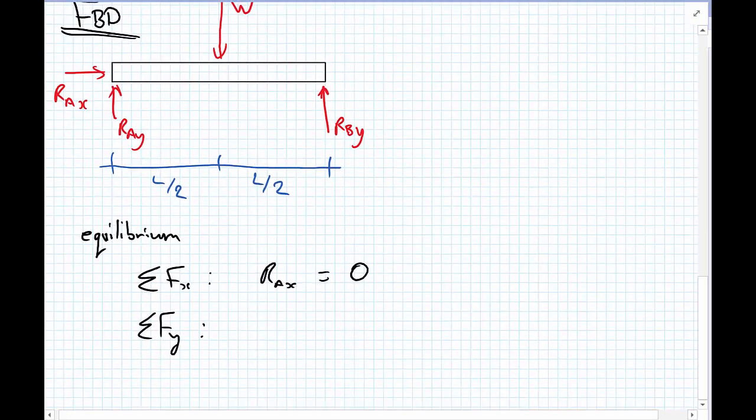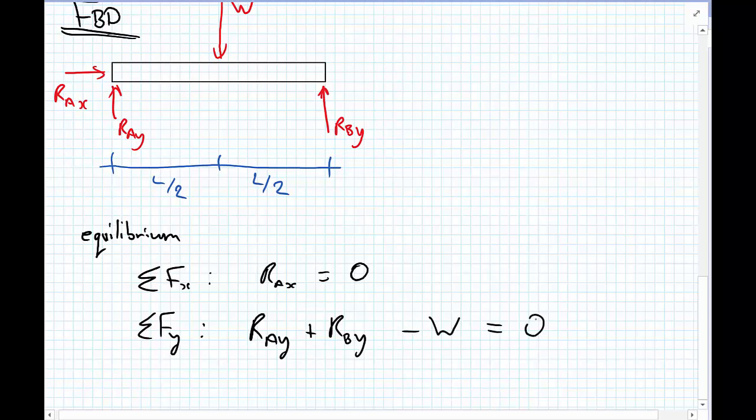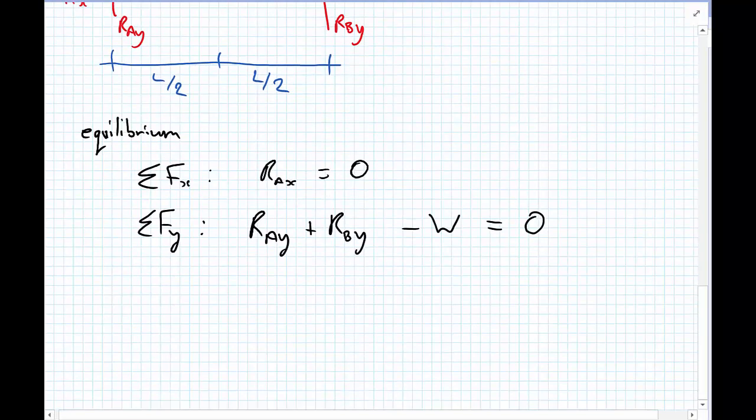Sum of the forces in the Y direction. And now we have pointing upwards RAY plus RBY minus W equals 0. And let's take moments about somewhere. I'm going to take moments about point A. So, the left-hand side of the beam. Take moments about A.